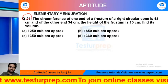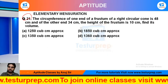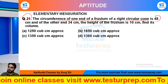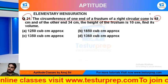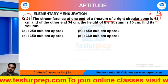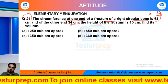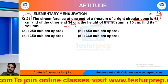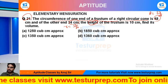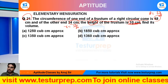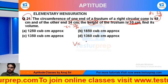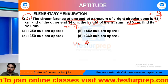This is question number 21. The circumference of one end of a frustum of a right circular cone is 48, that means radius will be equal to 24 divided by pi, and the lower radius is equal to 17 divided by pi. We have given height, height is equal to 10.